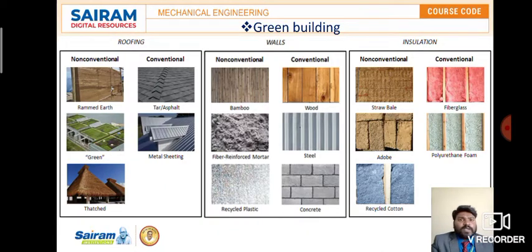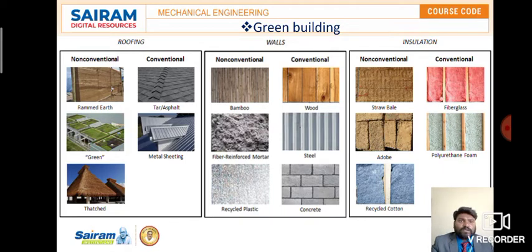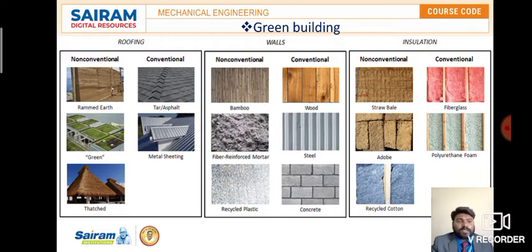Now, what can we contribute when constructing a building or house? Let me explain the difference between conventional and non-conventional methods in green building. For roofing, the conventional method uses tar, asphalt, and metal sheeting. The non-conventional method uses rammed earth or thatched materials, as shown in the building pictures.